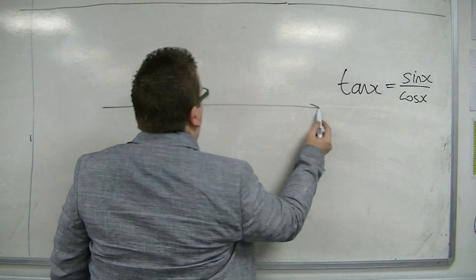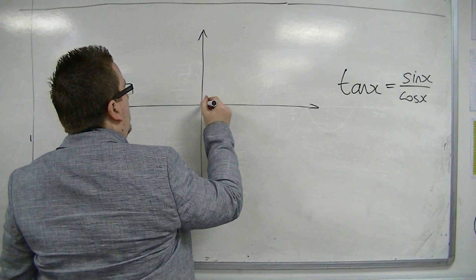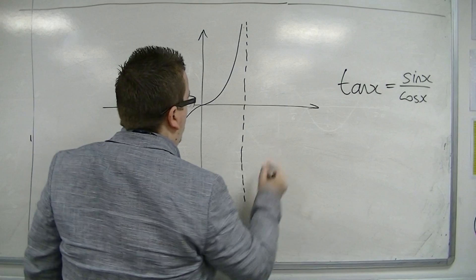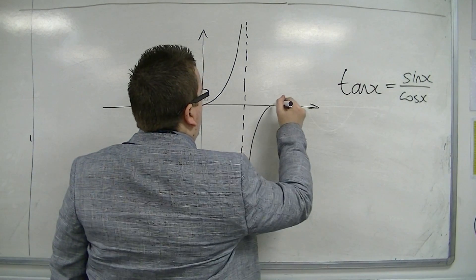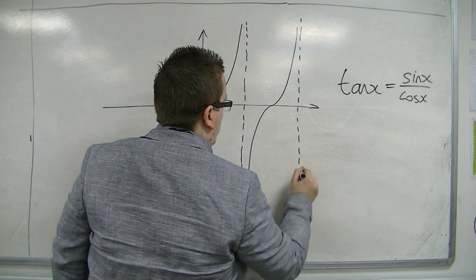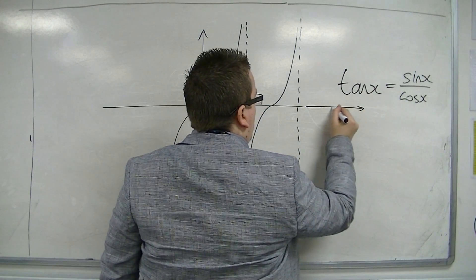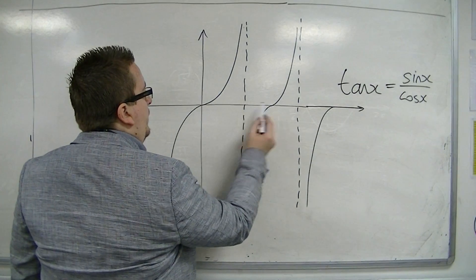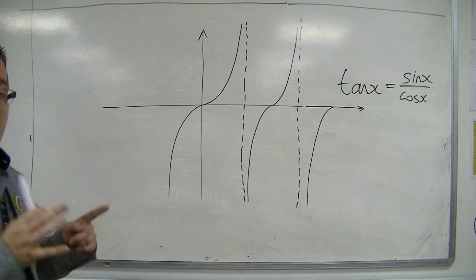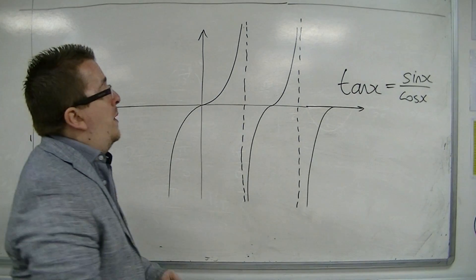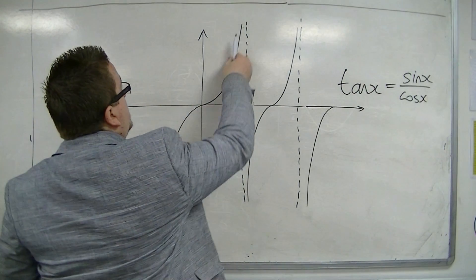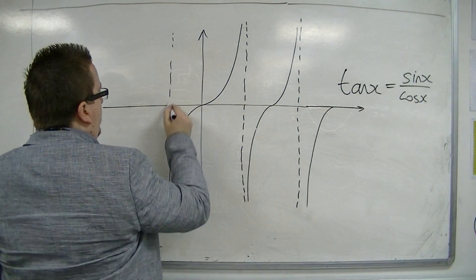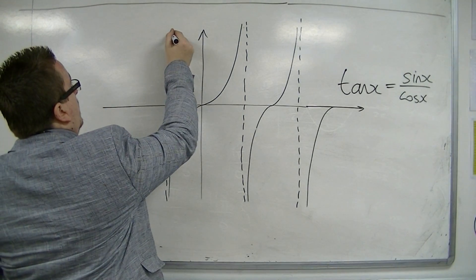So when you're sketching tan, it looks like this. I always don't leave quite enough room. So there are these points where I'm drawing these dotted lines — these are called asymptotes, and that is where the graph does not exist. You can see that the curve tends towards these straight vertical lines, and it works either side of the y-axis.